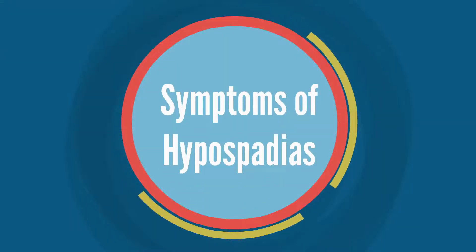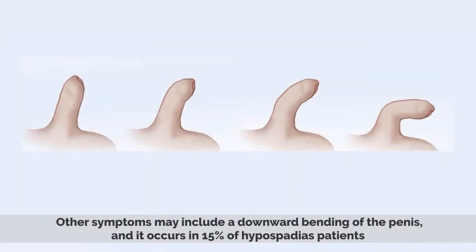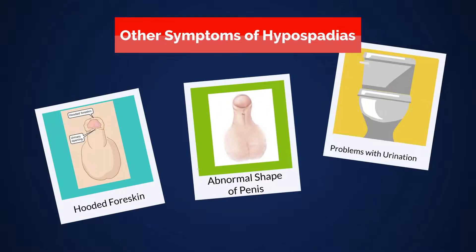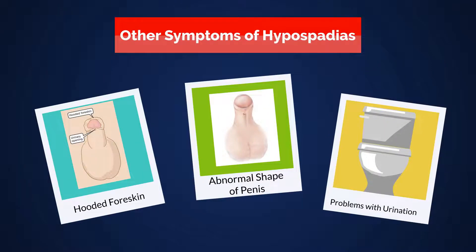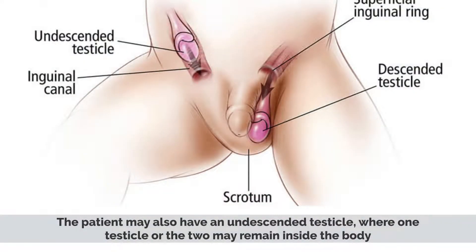Symptoms of hypospadias. The most obvious symptom of hypospadias is the abnormal placement of the urethral opening. Other symptoms may include a downward bending of the penis, which occurs in 15% of hypospadias patients, a hooded foreskin, an abnormal shape of the penis, and problems with urination such as spraying or having to sit down to urinate.